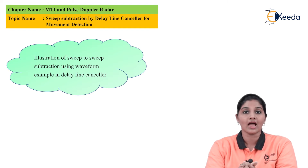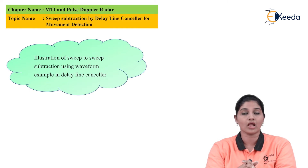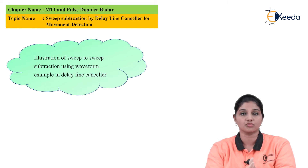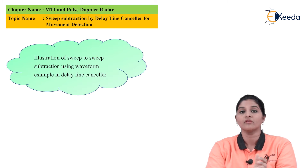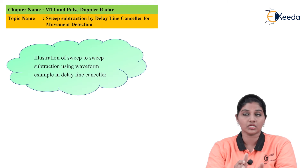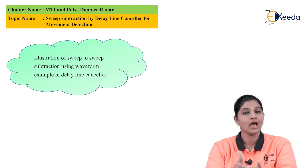A fixed echo clutter signal having the same amplitude or the same pattern from one sweep to another sweep — even if one sweep is subtracted from the previous sweep, the clutter is cancelled and it becomes undetectable.